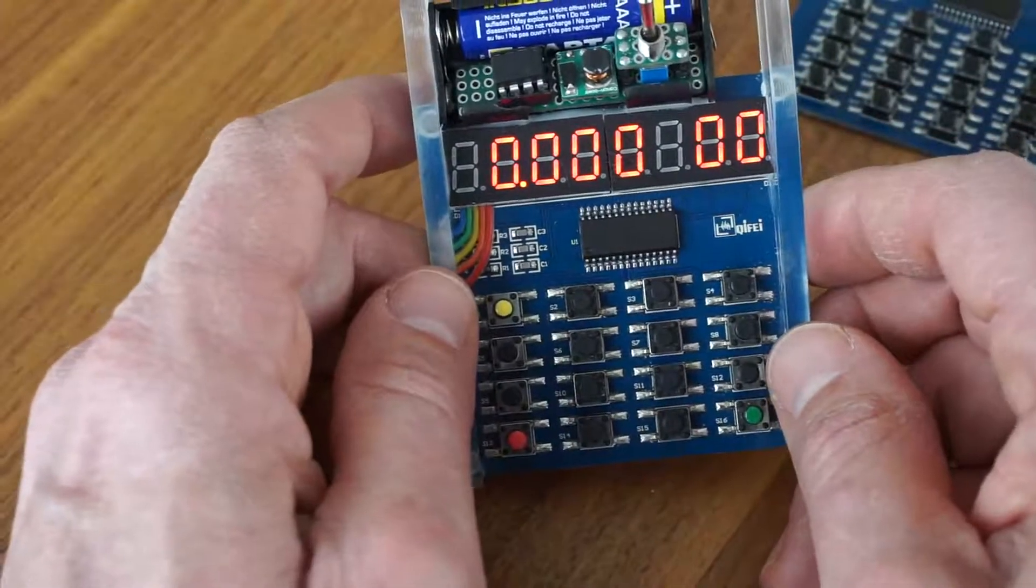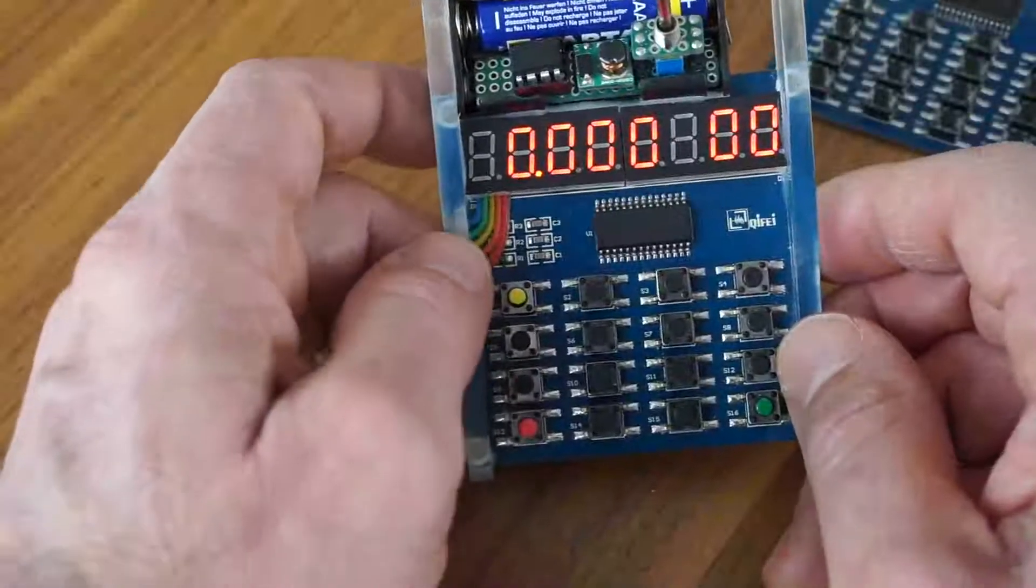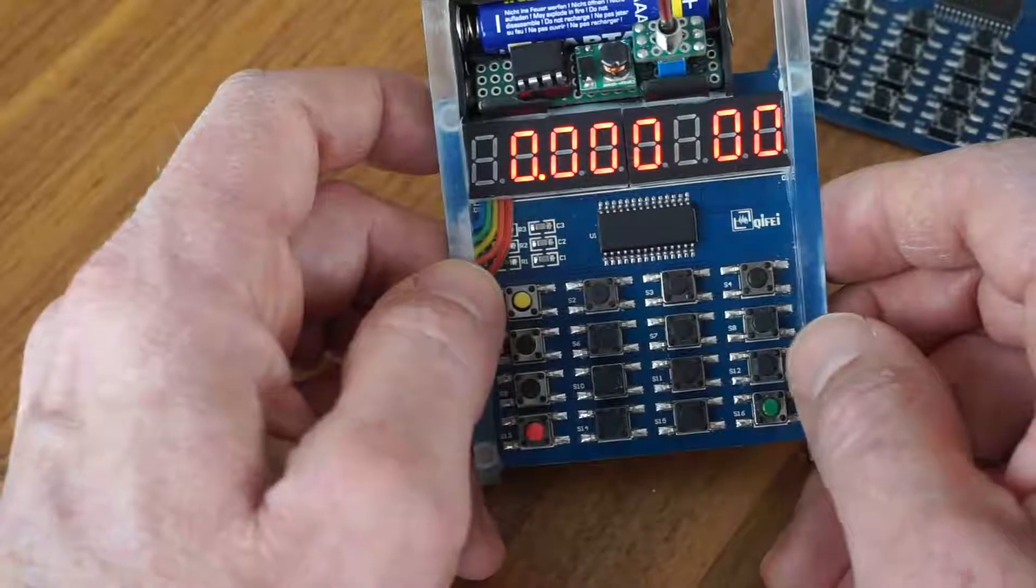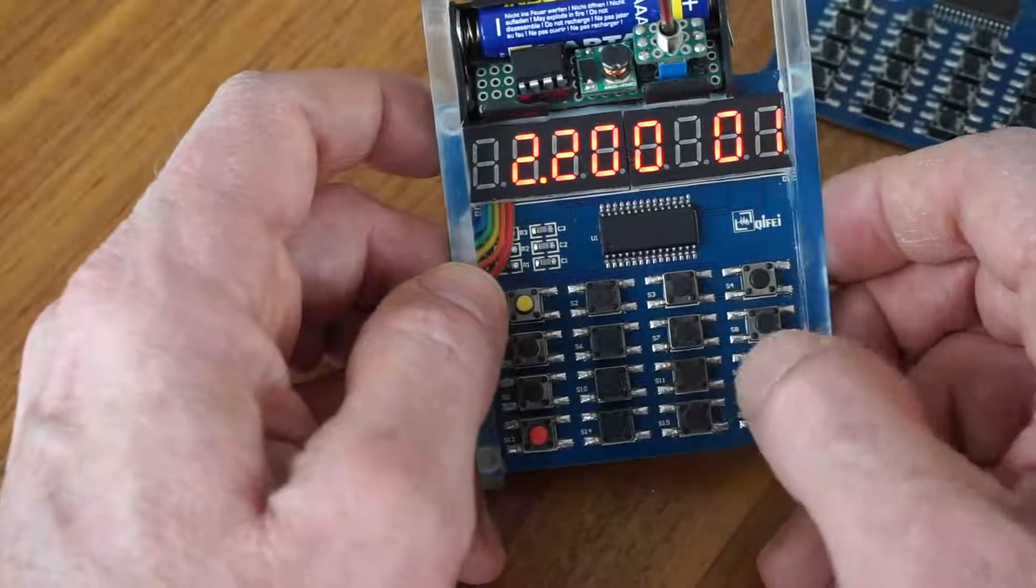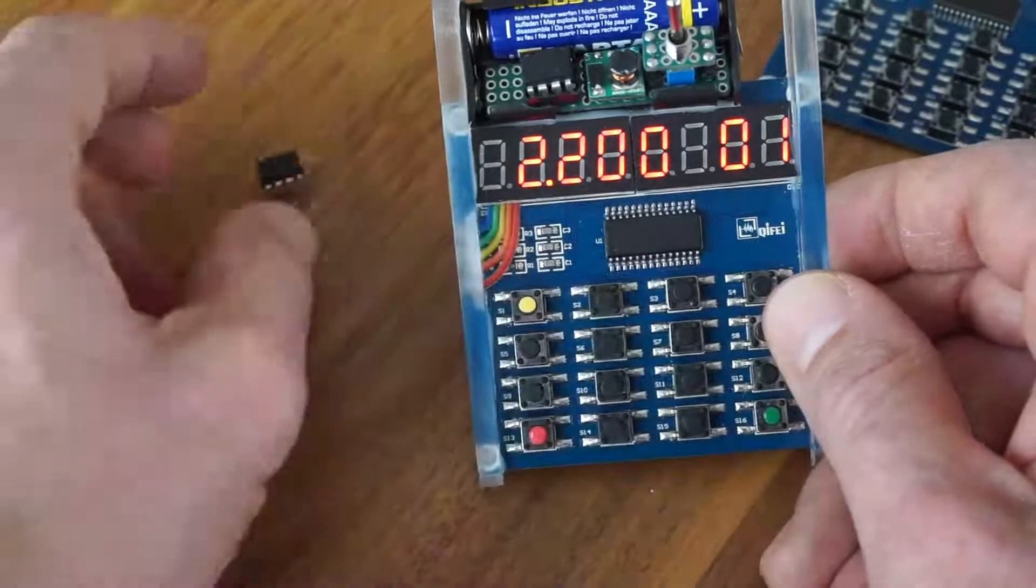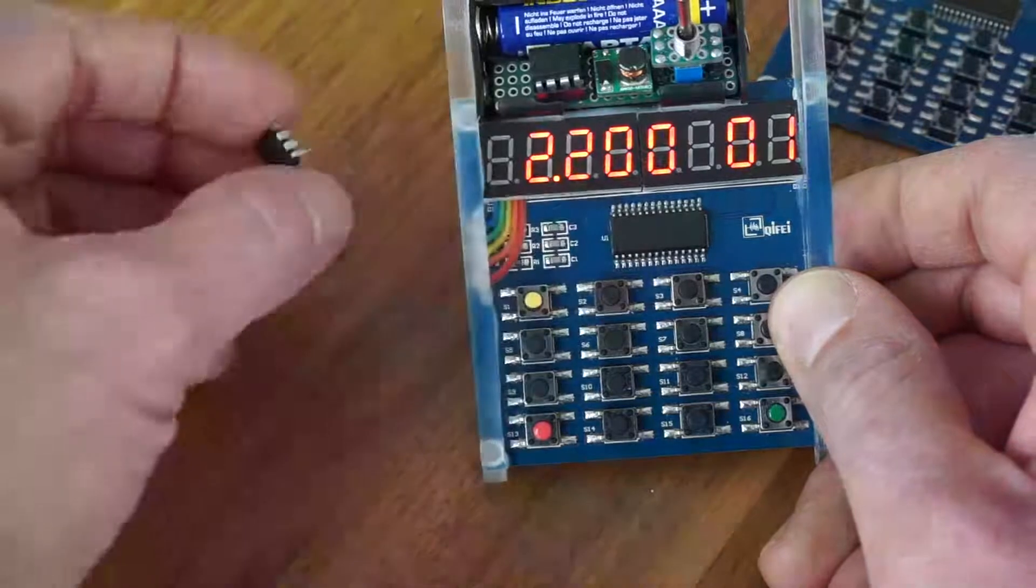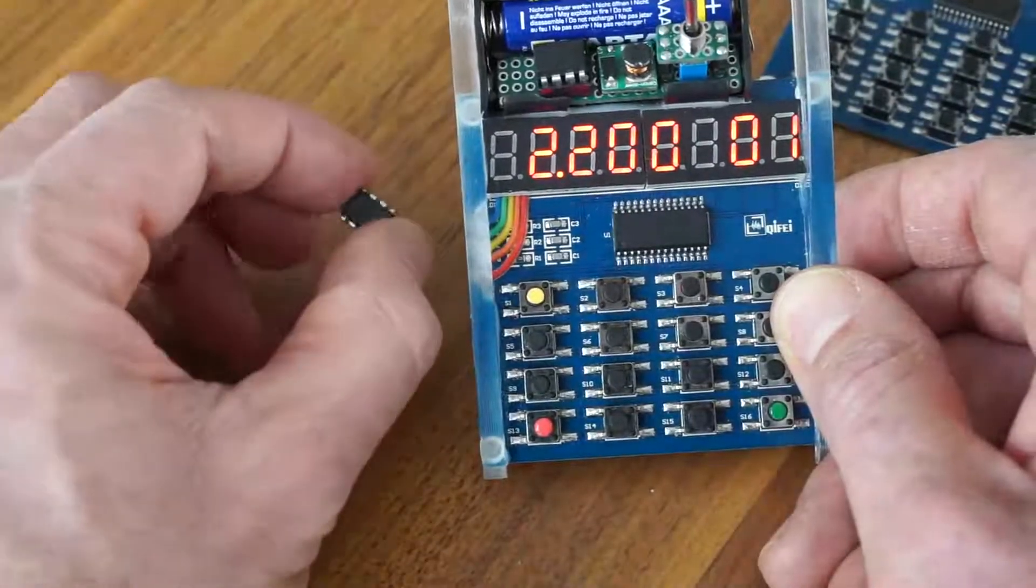So if you want to calculate like an approximation of pi, 22... there is one compromise because this ATtiny has eight kilobytes of memory only, and this is really less.